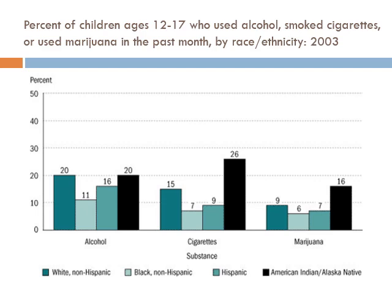Breaking down substance use by ethnicity for children age 12 to 17 who used alcohol, cigarettes, or marijuana in the past month: American Indian and Alaska Native people have rates equal to or higher than white people for alcohol use, considerably higher for cigarette substances, and higher for marijuana. White people also show higher use rates for cigarettes, marijuana, and alcohol compared with Black or Hispanic individuals.